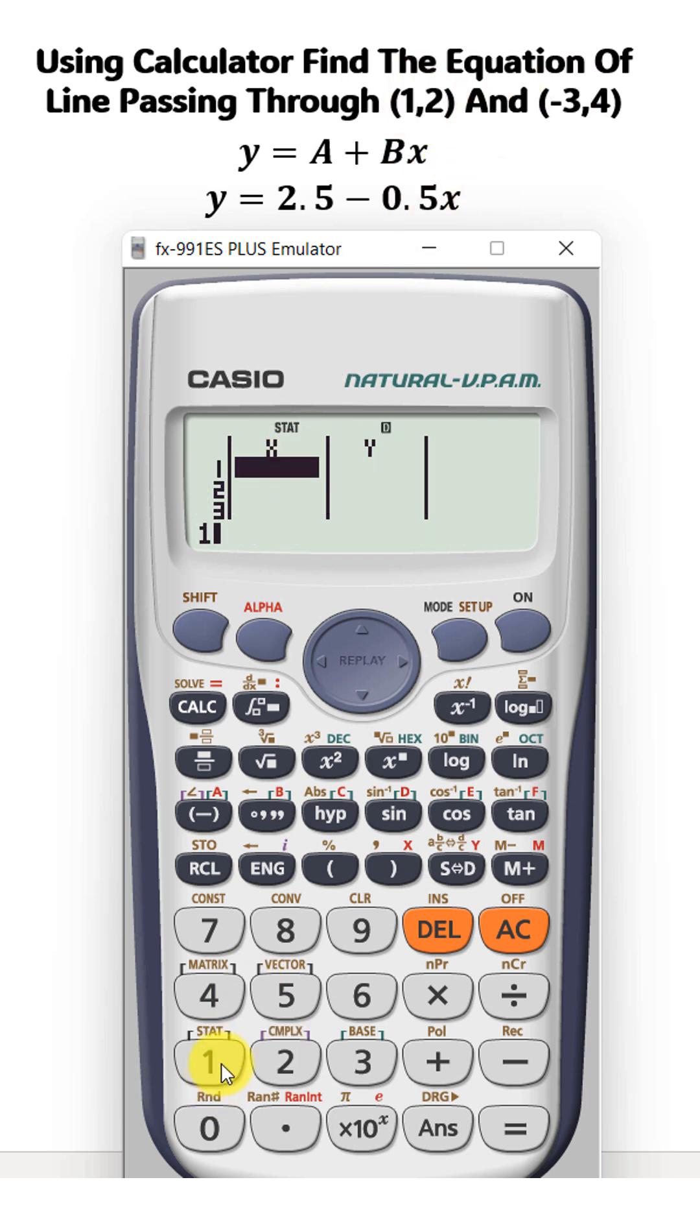The x value for point number one is 1. For the second point, the x value is -3. For x=1, the y value is 2, and for x=-3, the y value is 4. Then press AC, shift, and then for statistics press 1.